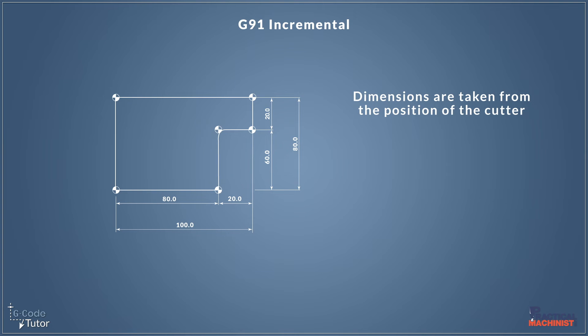So if we give the machine the G-code G91 it would put it into the incremental positioning system. And when we're in this system all dimensions are taken from the last known position of the cutter. So if we were to machine this part here it would be like moving our datum every time we move the cutter, as all the positions will come from that datum.